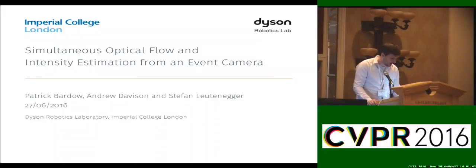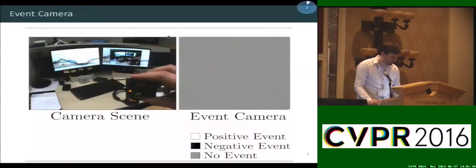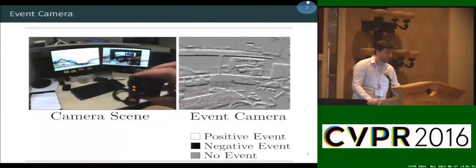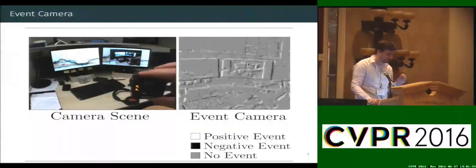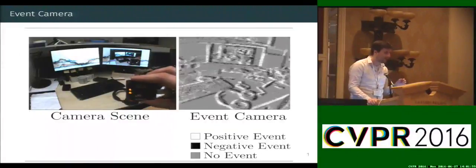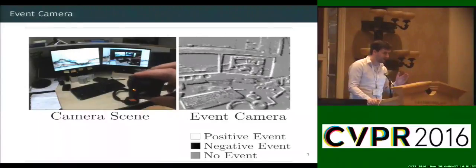Hello. So what is an event camera? An event camera is a new camera paradigm which only detects changes in intensity in the image region instead of giving us an image like a normal camera does.